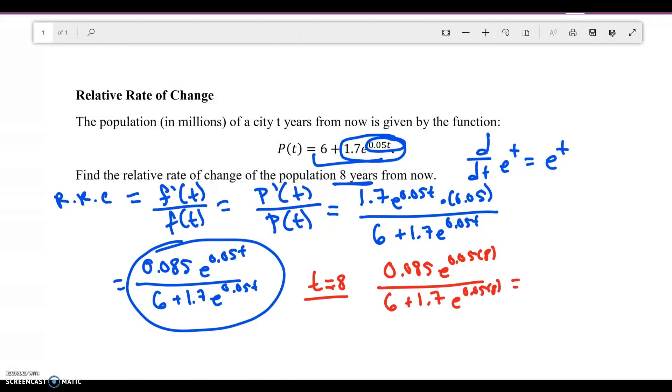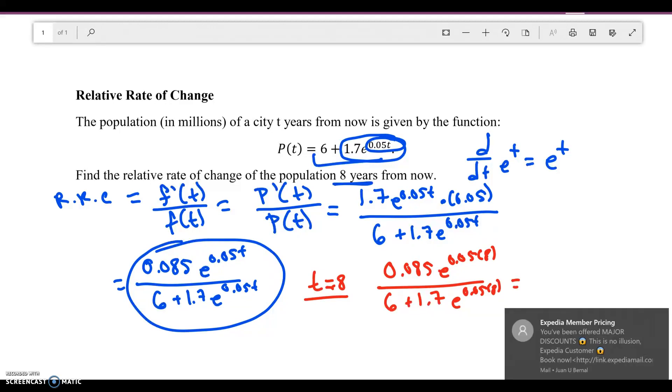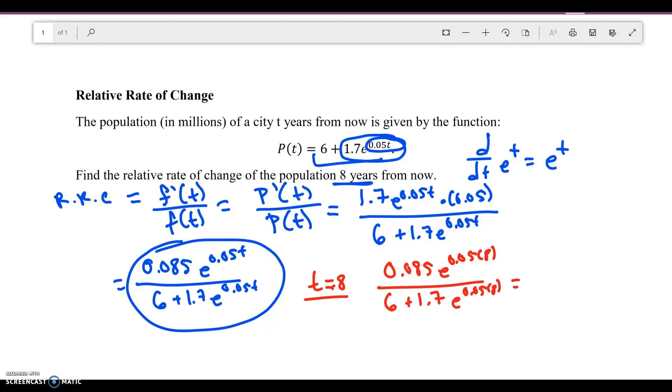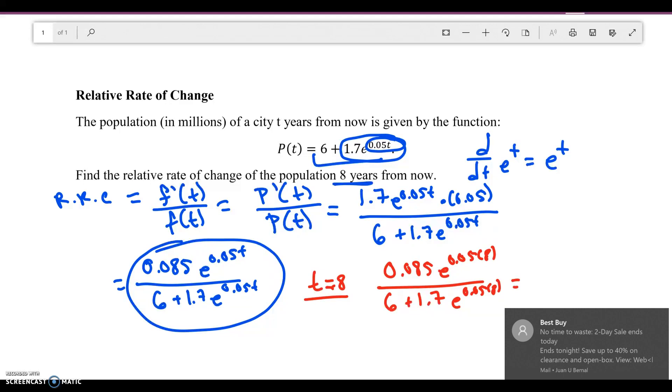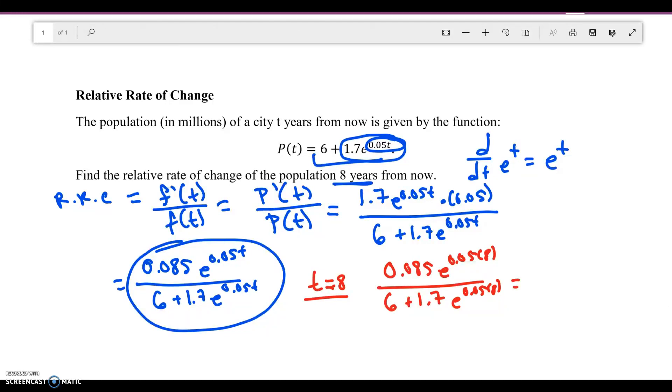This is just a monster of a problem. So just go ahead and use your calculator. Plug all that in. So I'm going to get 0.085 e to the power of 0.05 times 8 divided by 6 plus 1.7 e to the power of 0.05 times 8.